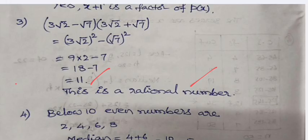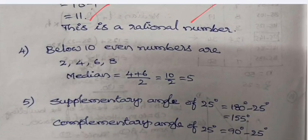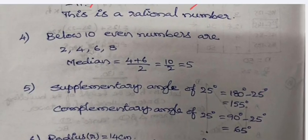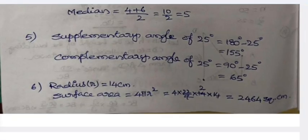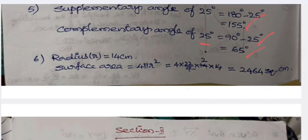Below 10, even numbers are 2, 4, 6, 8, so median is the middle. Two terms are 4 and 6, their average is 5. Supplementary angle of 25° is 180 - 25 = 155°. Complementary angle of 25° is 90 - 25 = 65°. Let radius r be 14 centimeters. Surface area 4πr² is 2464 square centimeters for this sphere.